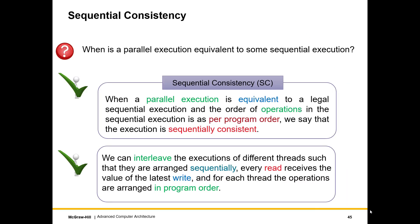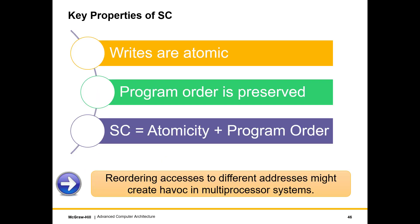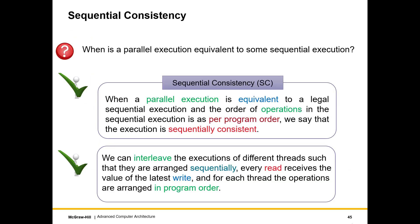Let us now start by extending what we had discussed in the previous slide set. There we had established an equivalence between a parallel execution and a sequential execution. We had given this criteria, but we had not extended the logic further to actually create a correctness criteria or to say when a given outcome is valid or not. In a certain sense, this was not extended to a memory model.